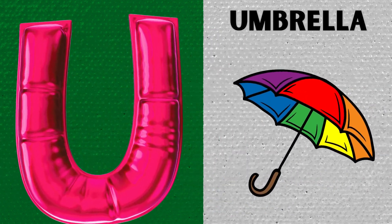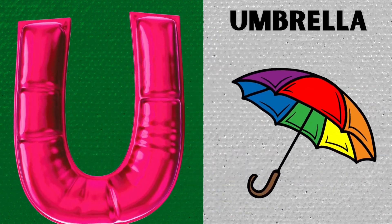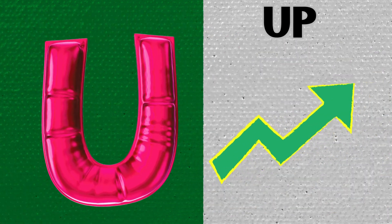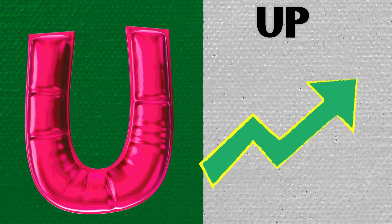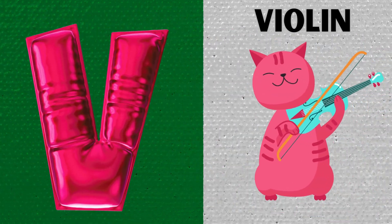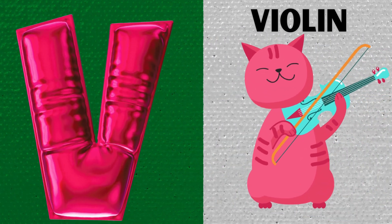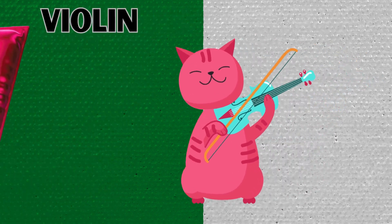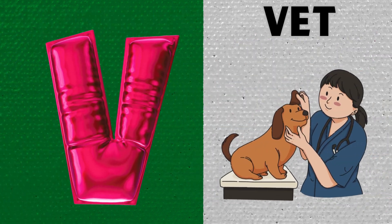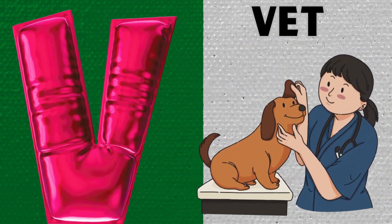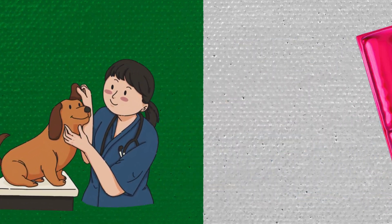U is for Umbrella. U-Umbrella. U is for Up. U-U-Up. V is for Violin. V, V, Violin. V is for Vet. V, V, Vet.